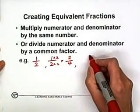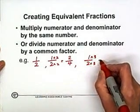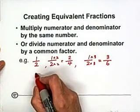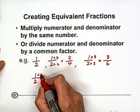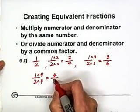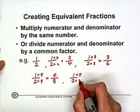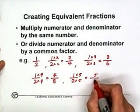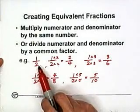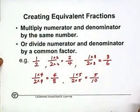Or you multiply by three to the top and the bottom, you get three over six. You can also multiply by four to get four over eight, and multiply by five to get five over ten. We can make as many as we need. So one over two, two over four, three over six, four over eight, five over ten — they are all equivalent fractions.